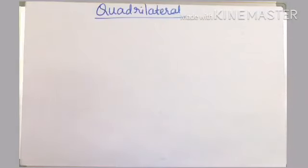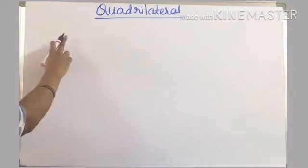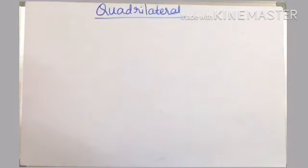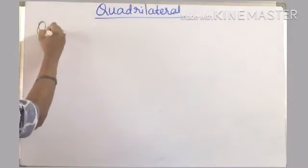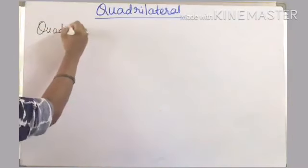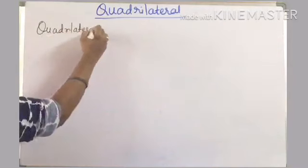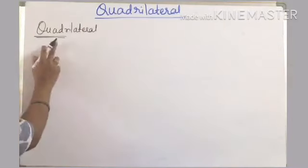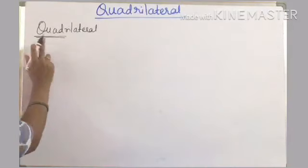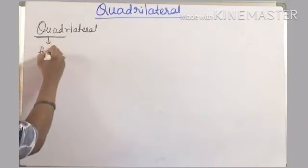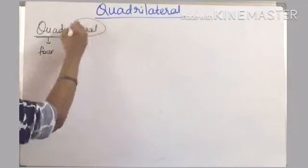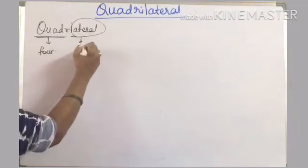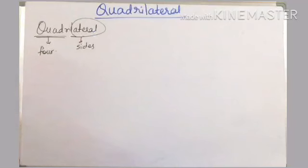What is a quadrilateral? It is a simple closed figure formed by four line segments. The word 'quadrilateral' is originated from two Latin words — 'quad' means four and 'lateral' means sides. So overall, quadrilateral means four sides.